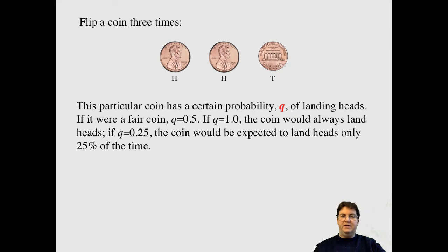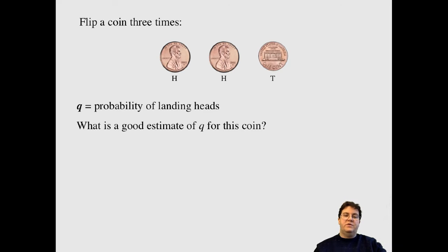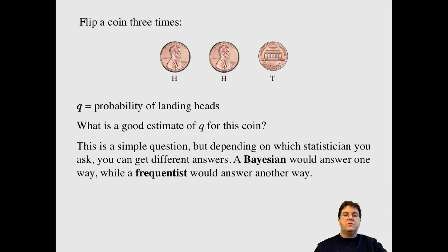Let's start with coin flipping. A simple example, which we all use in stats to help you understand. Of course, in biology, we have many things that are like this. You know, it's probably a speciation. What's the chance rate of character change at different points in time? Things that are of this sort. Let's do this simple example. This coin has a certain probability, q, of landing heads. If it's a fair coin, q is 0.5. If q is 1, the coin always lands heads, and so forth. So what's a good estimate of q for this coin? And so, it's a simple question, but depending on what kind of statistician you are, you have different answers. A Bayesian would answer one way, a frequentist would answer another way.